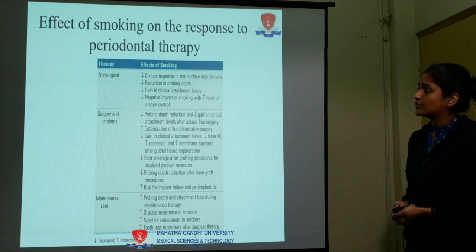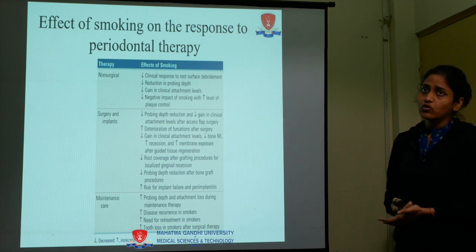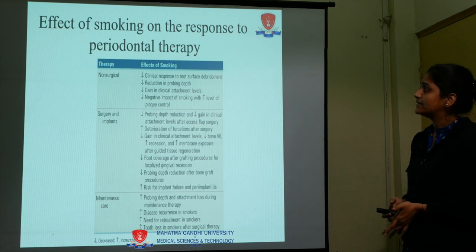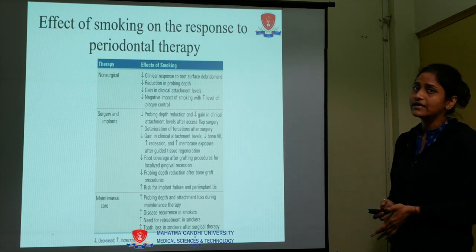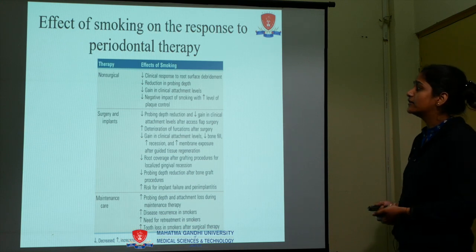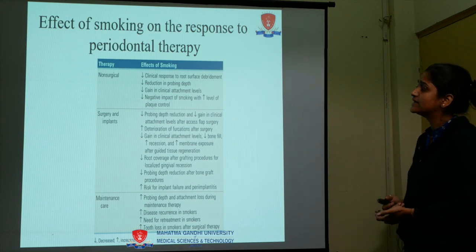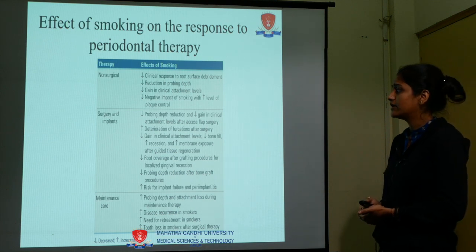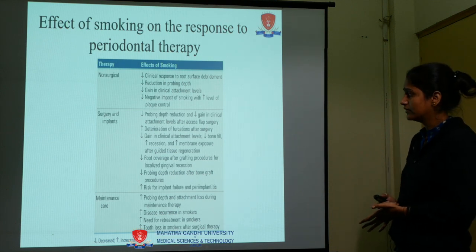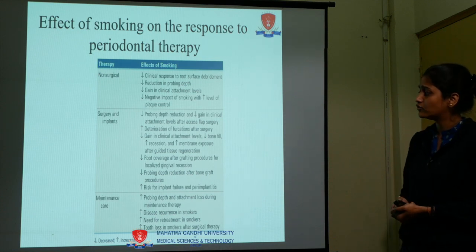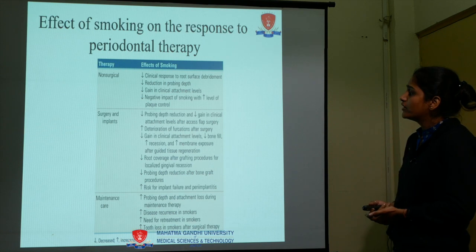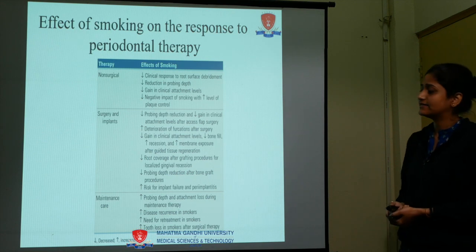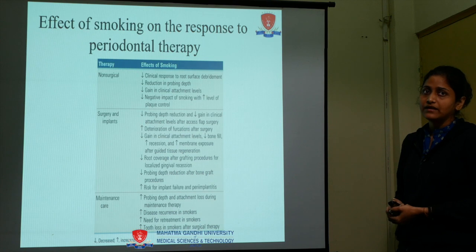When coming to surgical procedures, comparing smokers and non-smokers, after surgical therapy smokers show decreased probing depth reduction and decreased gain in clinical attachment levels. After flap surgery, there is decreased resolution of furcation after surgery, decreased gain in clinical attachment level, decreased bone fill, increased recession, and increased membrane exposure after guided tissue regeneration. There is also decreased root coverage after grafting procedures for localized gingival recession, decreased probing depth reduction after bone graft procedures, and increased risk for implant failure and peri-implantitis.